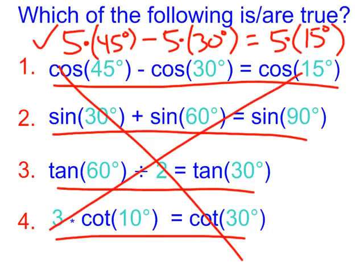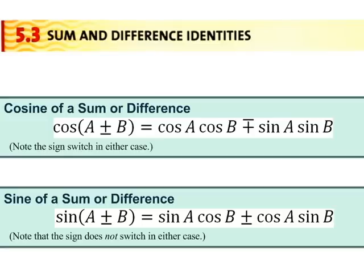So we need some properties to help us figure out how to handle addition and subtraction within a trig function. And that brings us to the sum and difference identities. I'd suggest you pause the video for a moment, take a look at these, study this, make sense out of it.